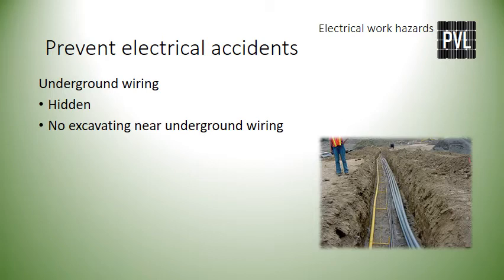Underground wiring is generally hidden from view and can be buried only inches from the surface. There is a danger of damaging underground wiring when excavating and causing harm to persons. Before excavating, even by hand, a permit must be granted to prevent contacting a live underground wire. If working in the electrical system of an existing structure, the service entrance drop is often an underground wire or cable called a feeder that follows a direct path from the transformer to the service entrance panel. When a permit is acquired, the area to avoid excavating will be clearly marked by the power provider.